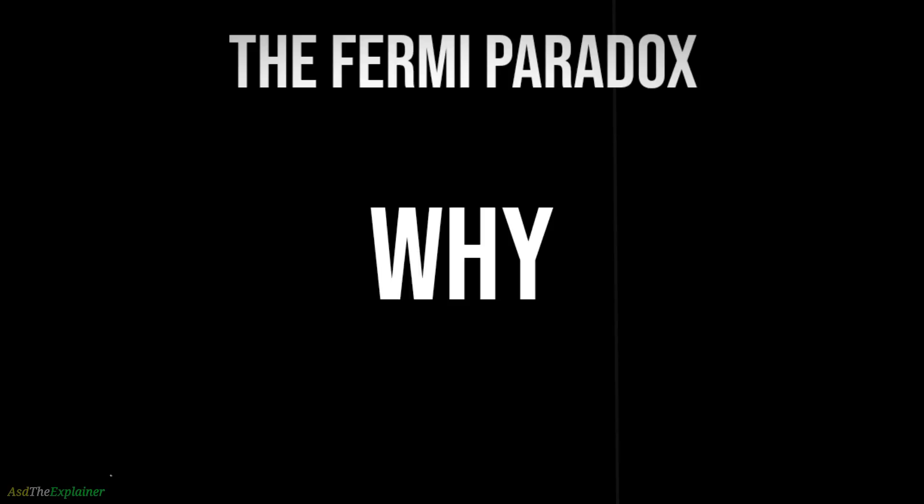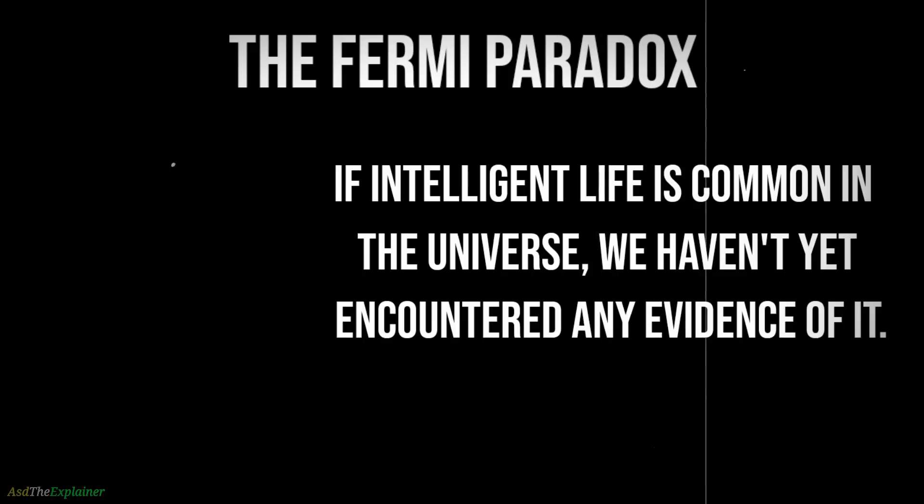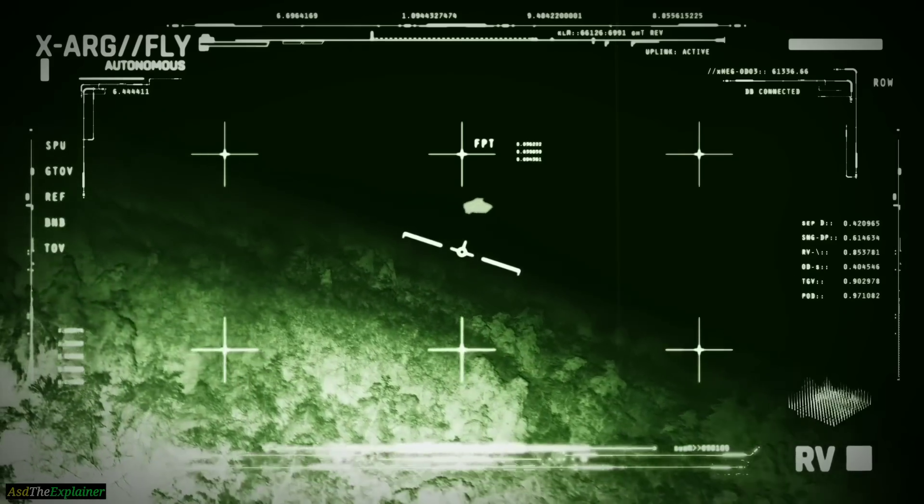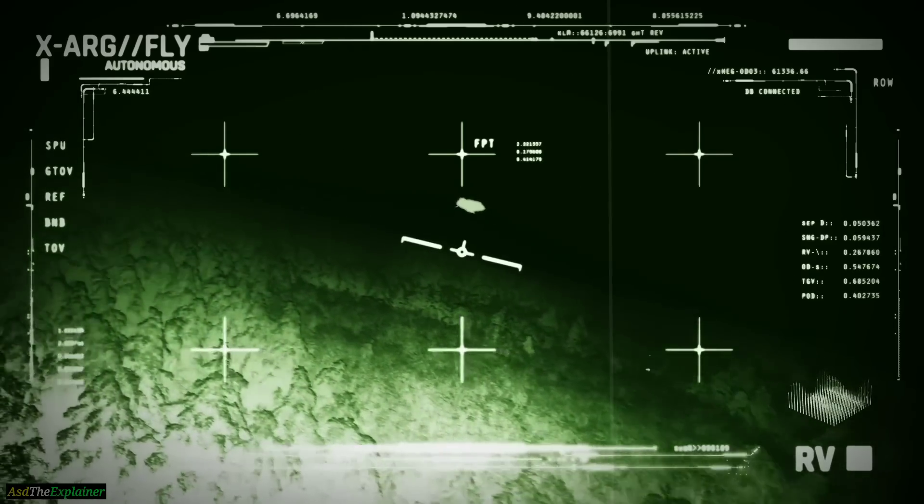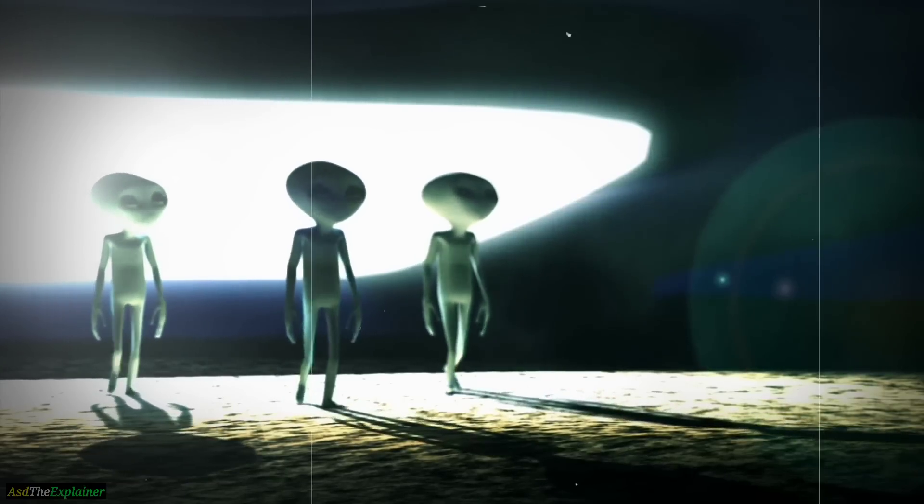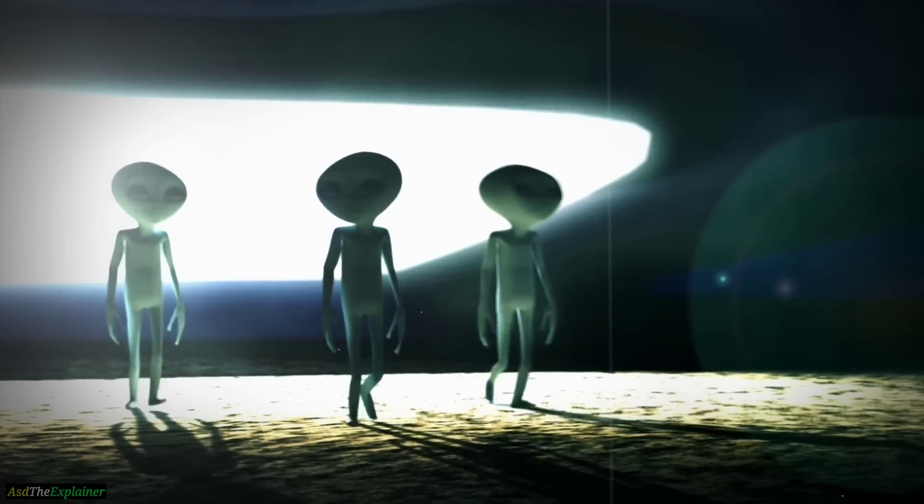The Fermi Paradox is a question that asks why, if intelligent life is common in the universe, we have not yet encountered any evidence of it. Although the term is named after physicist Enrico Fermi, he did not dedicate much of his work to studying extraterrestrial life. Instead, the idea of the paradox arose from a conversation Fermi had with colleagues at lunch, sparked by a cartoon depicting aliens stealing trash cans from New York City.